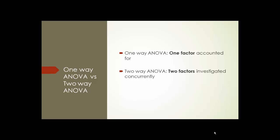In a one-way ANOVA, the researcher takes only one factor, while in the case of a two-way ANOVA, the researcher investigates two factors at the same time.